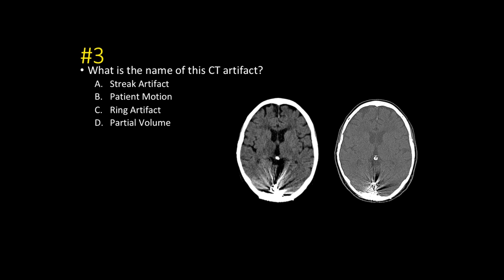What is the name of this CT artifact for case number three? This is streak artifact. This was a patient that had onyx embolization of an AVM, and the onyx material's Hounsfield units are so high on the lookup table that the CAT scan doesn't know what to do with that density and creates a bunch of streak artifacts.